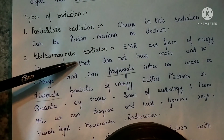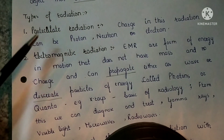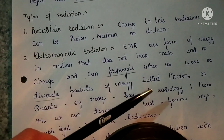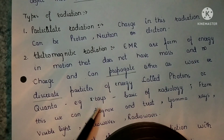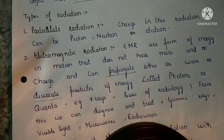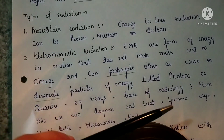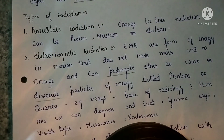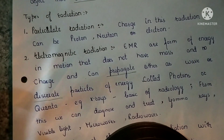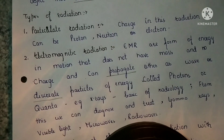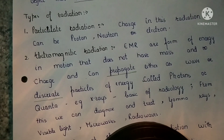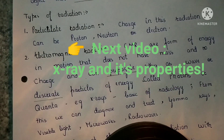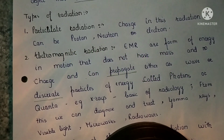An example of electromagnetic radiation is X-ray, which we are going to discuss throughout this subject. X-ray is the basic of radiology — whenever you are asked what is the basic of radiology, the answer is X-ray. From X-ray we can diagnose and treat diseases in the human body. Another example is gamma rays, which are also used in radiology. Other examples include visible light, microwaves, and radio waves. This was all about the basic introduction to radiology, radiation, and types of radiations. My next video will be on X-rays — a detailed overview of X-rays and their properties. Thank you for watching, take care.